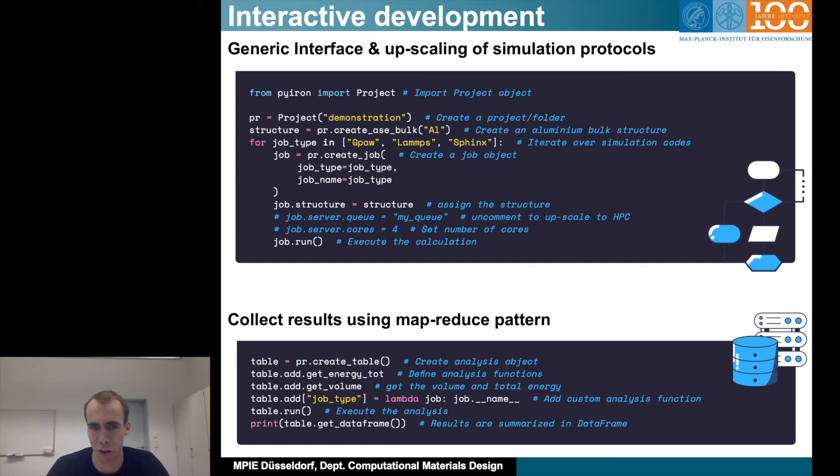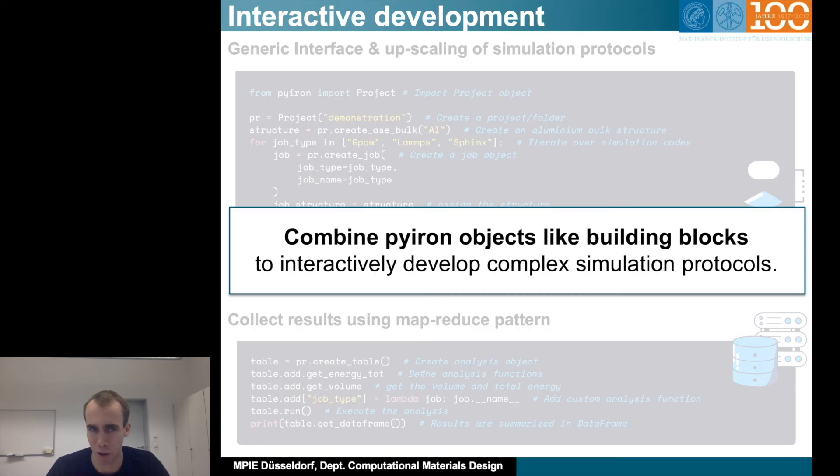We have a lot of predefined functions, so you can either get total energy or get volume, but you can also define your own function. This is really what's powerful. Basically, each function then becomes one column in your data frame, in your table. And so the jobs would be the different rows and then your columns would be filled automatically by this function. You define all the functions and then call run, and then Pyron automatically iterates over all jobs inside one project and returns this data frame. With this data frame you can use it inside machine learning or other applications which are available inside Python. So again, the part here is we can combine Pyron objects like building blocks to interactively develop complex simulation protocols.